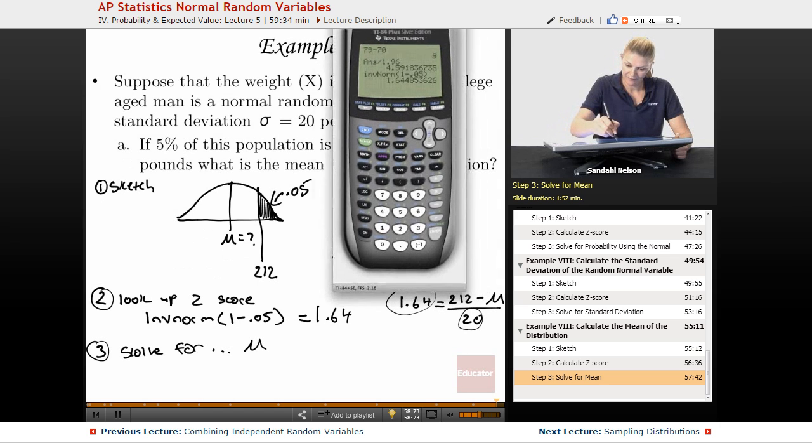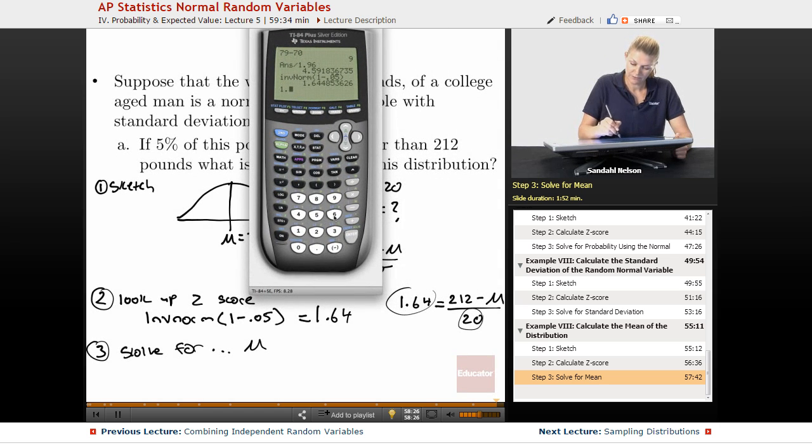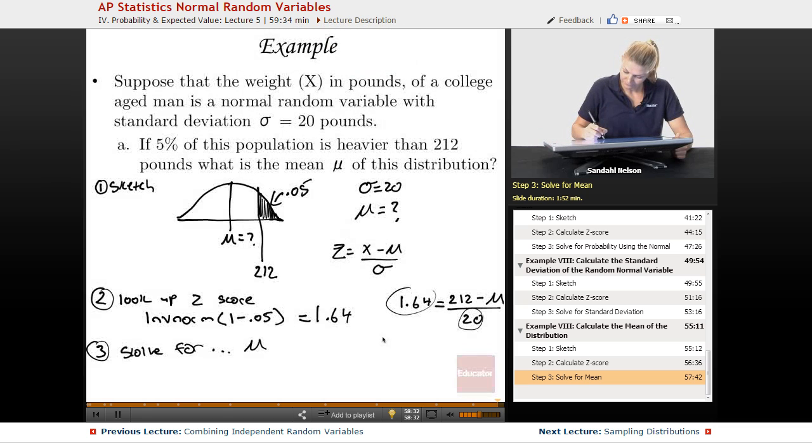So we have 1.64 times 20, which is 32.8, equals 212 minus the mean.